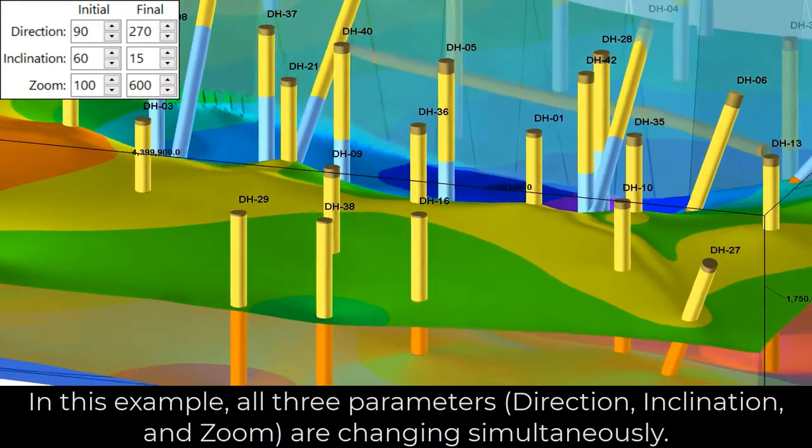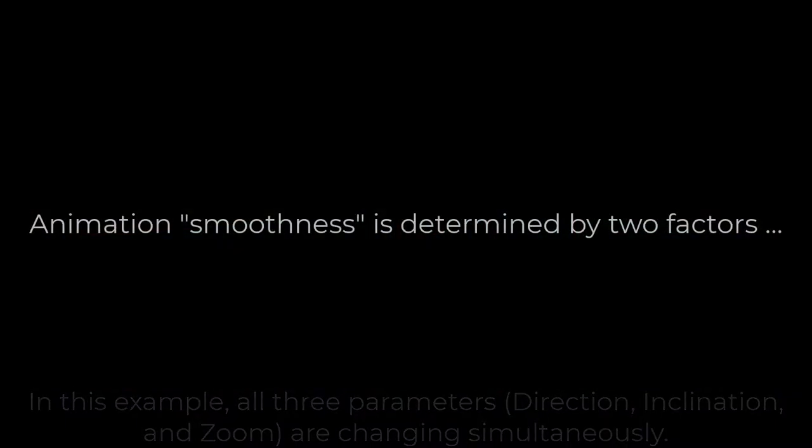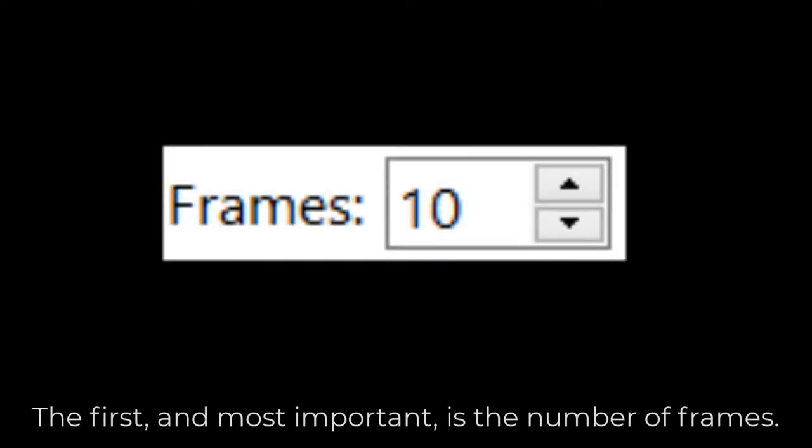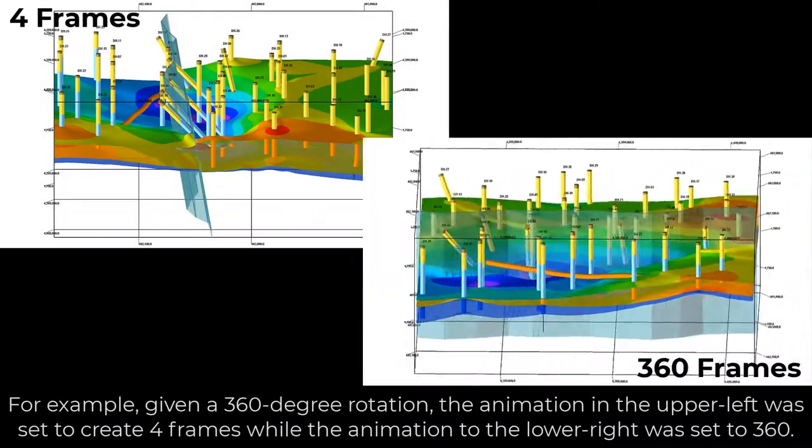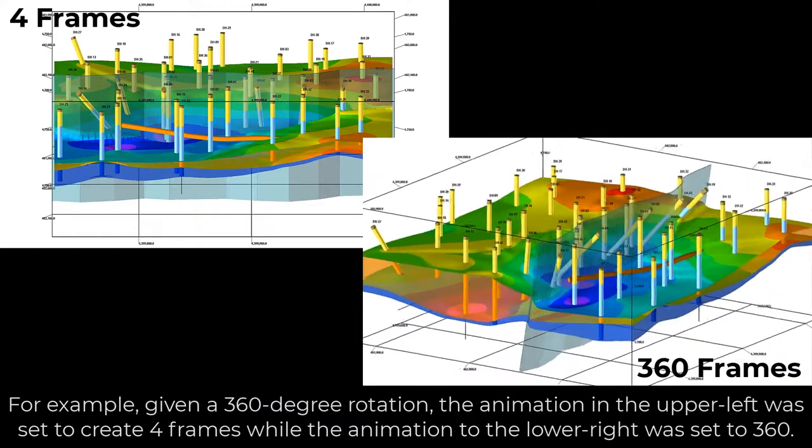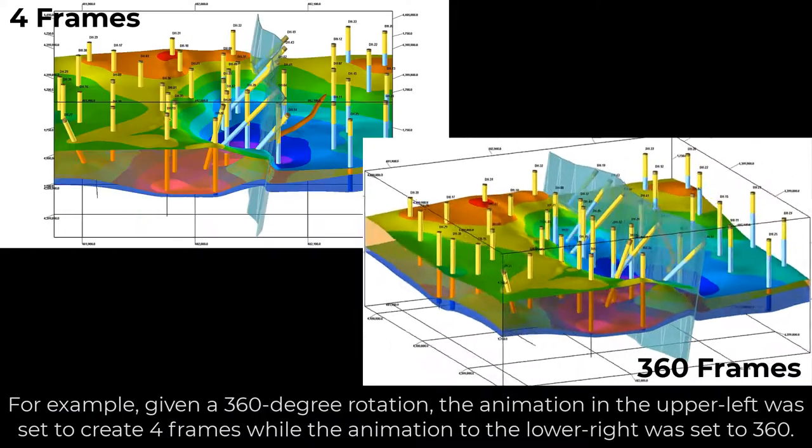Animation smoothness is determined by two factors. The first, and most important, is the number of frames. For example, given a 360-degree rotation, the animation in the upper left was set to create 4 frames, while the animation to the lower right was set to 360.